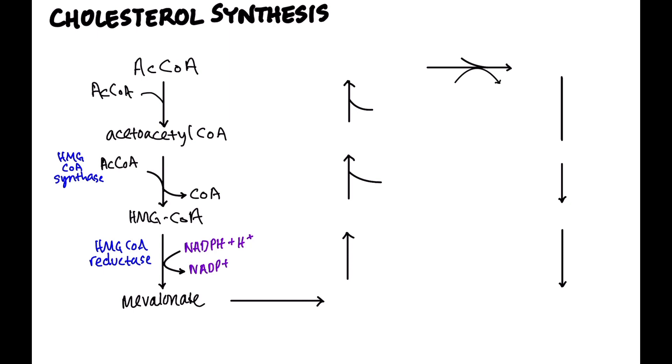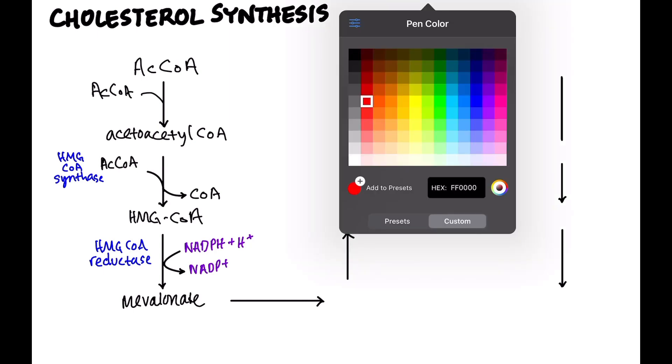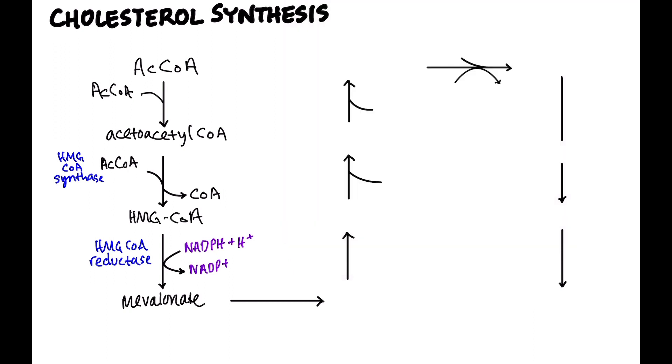So HMG-CoA reductase is very important pharmacologically because it is the target of the statin medications, which is one of the most important drugs that we use in hypercholesterolemia to treat patients with high cholesterol. So statins directly inhibit HMG-CoA reductase. What else does it? Glucagon and cholesterol itself. And we'll see how that is on the next slide.